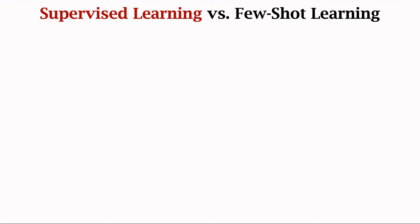Way and shot are terminologies of few-shot learning. K-way means the support set has K classes. In this example, the support set has six classes — fox, squirrel, rabbit, hamster, otter, and beaver — so K is six. N-shot means every class has N samples. In this example, every class has only one sample, so N is one. This support set is called six-way one-shot. Another support set has four classes — squirrel, rabbit, hamster, and otter — so it is four-way. There are two samples per class, so it is two-shot. That support set is called four-way two-shot.